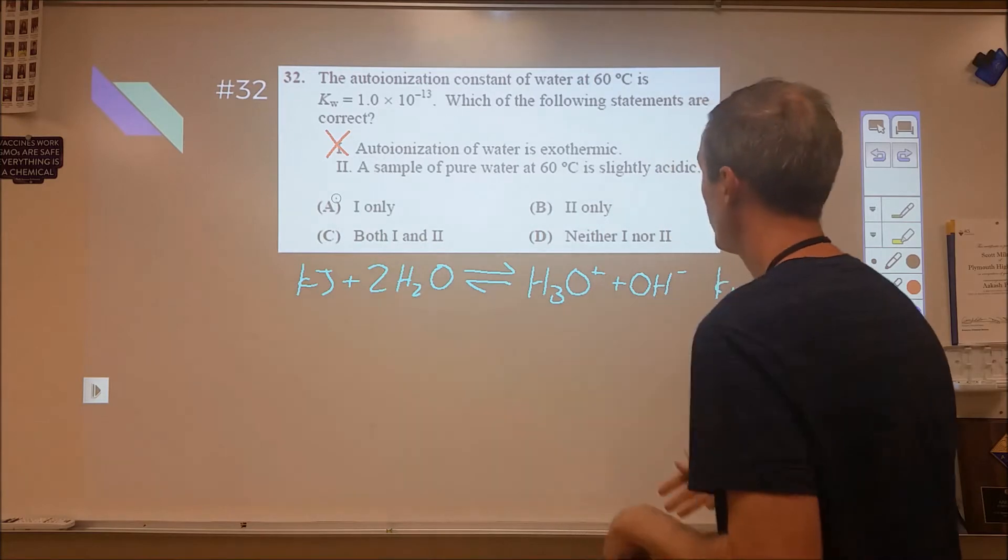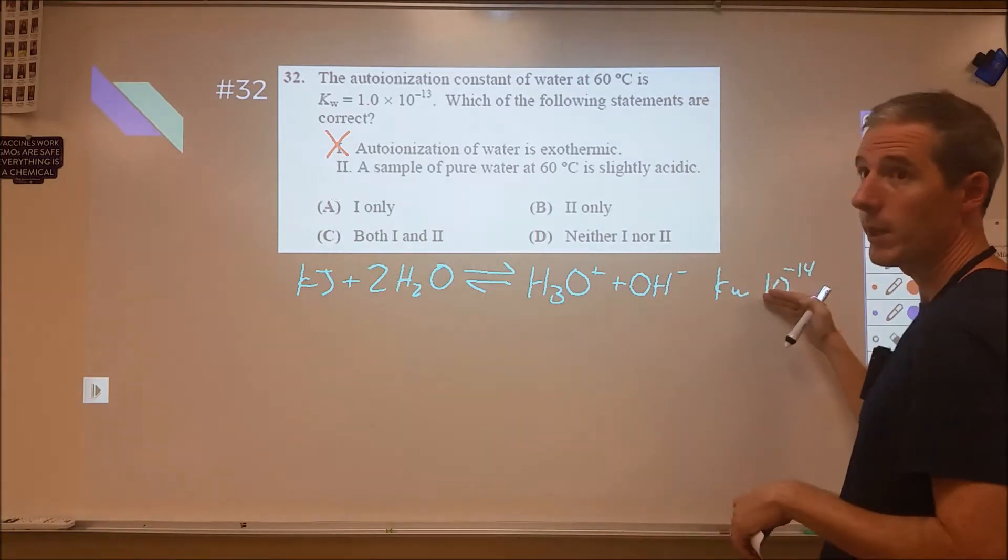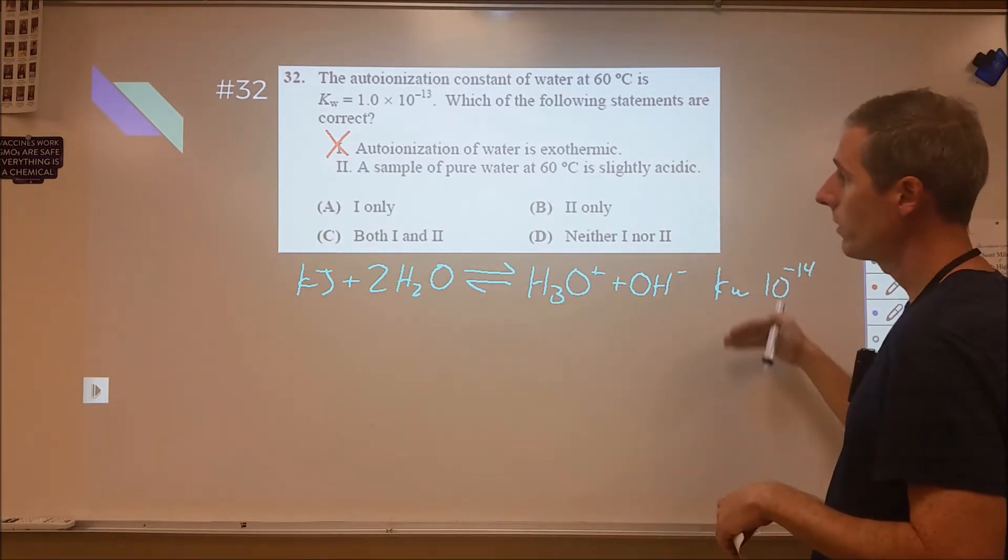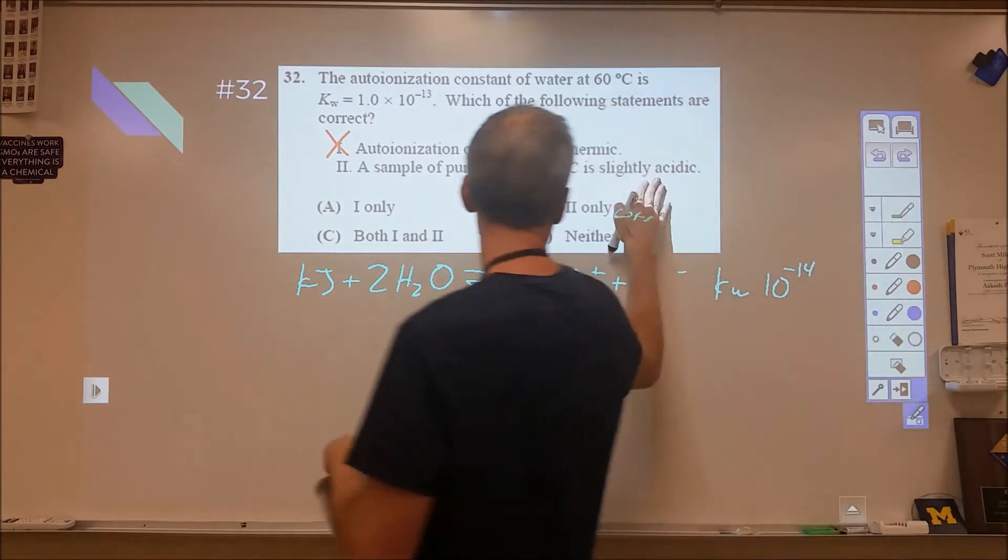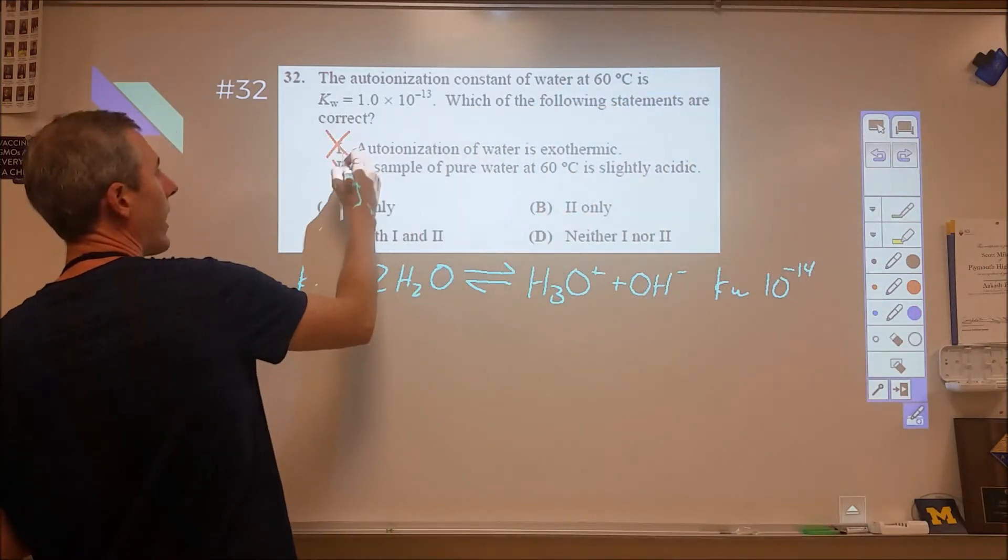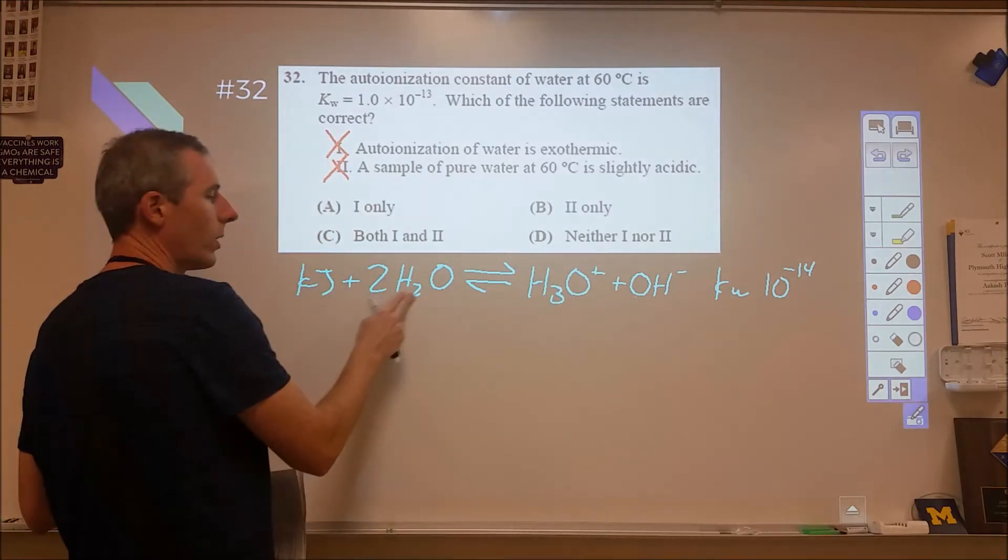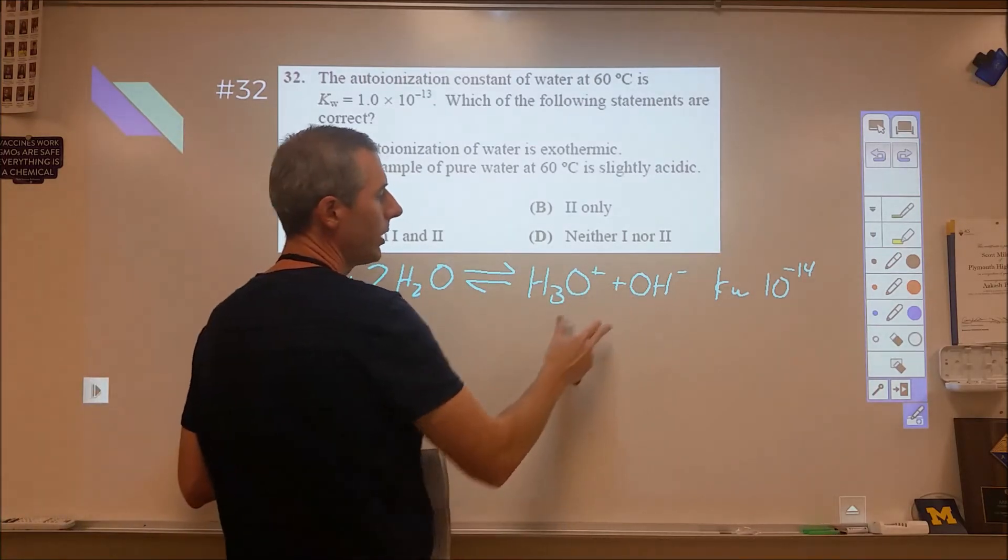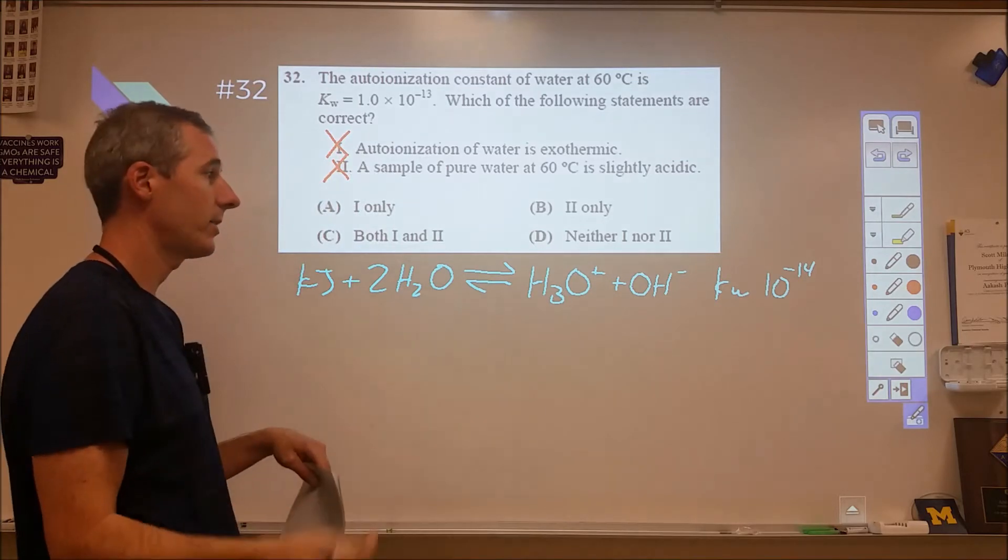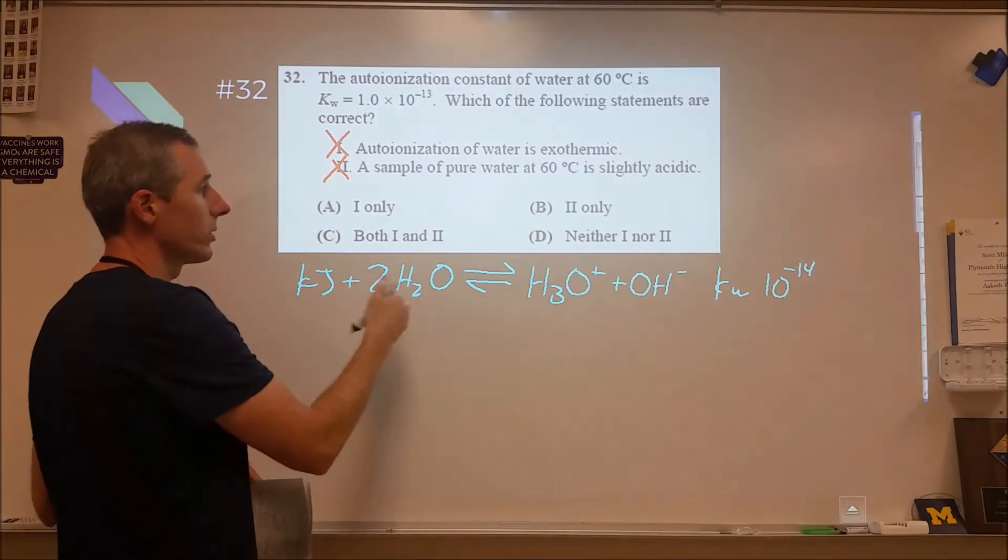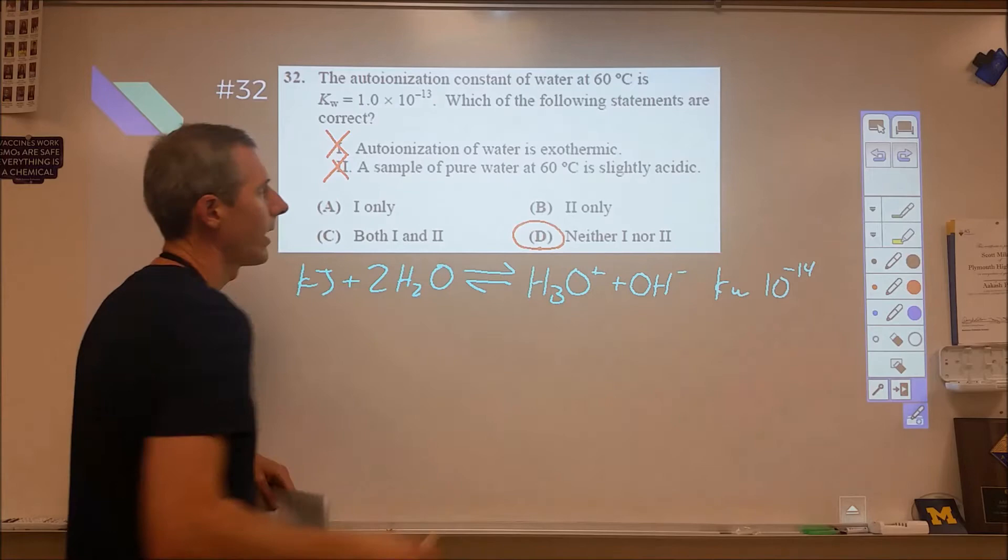The second part says a sample of pure water is slightly acidic. Now the pH will be below 7, but so will the pOH. And really, acidity is not about pH. It's about how your H plus and OH minus are balanced. And so as long as you're starting from pure water, you're not going to be able to produce an unequal amount of those unless you add an acid or a base to it. So 2 is also incorrect, and therefore D is our option for that.